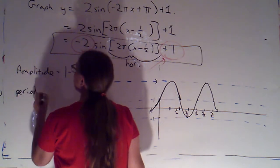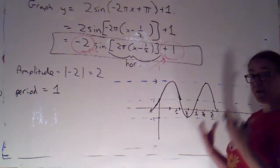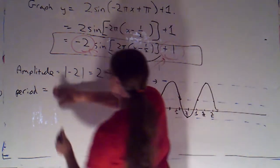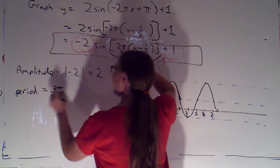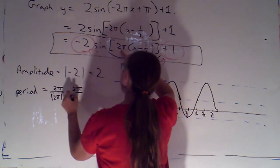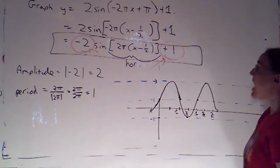Now, the period we had calculated, we said that that was 1. That was, remember, the original period of 2π divided by the absolute value of what I'm multiplying x by. That's just 2π over 2π, which is 1.